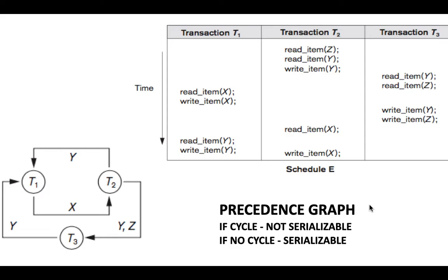We draw three nodes T1, T2, and T3, corresponding to the three transactions. The next aim is to identify conflicting operations. The schedule starts with T2, so since no other operations occur before those first T2 operations, they won't be conflicting with any previous operations. The possibility of conflict starts from the first statement belonging to another transaction.